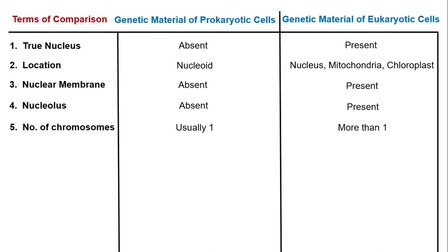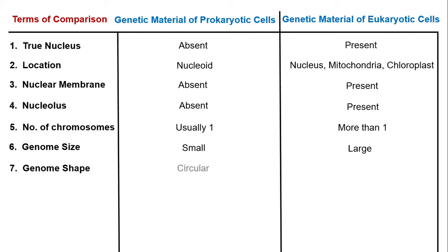Genome size is small in prokaryotic cells and large in eukaryotic cells. Genome shape is circular for prokaryotic cells and linear for eukaryotic cells.